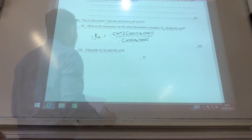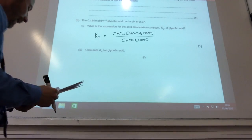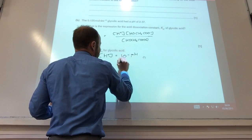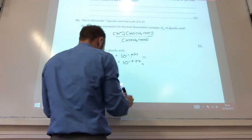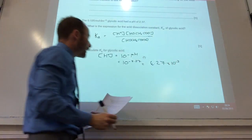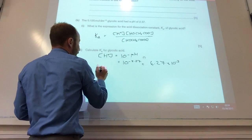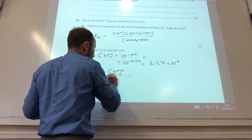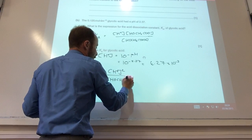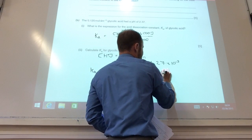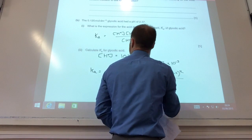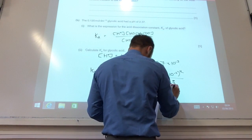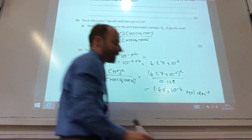We now need to calculate Ka for glycolic acid. It's given me some information, it's told me the pH. Because it's told me pH, I can calculate this, 10 to the minus pH, so 10 to the minus 2.37, that comes to 4.27 times 10 to the minus 3. I can say Ka is the concentration of H+, because we say those are the same from the equilibrium, over the concentration of the acid. So that would become 4.27 times 10 to the minus 3 squared over 0.125. If you bung that in your calculator, I would get 1.46 times 10 to the minus 4, and units for Ka are moles per decimeter cubed.